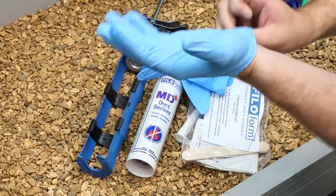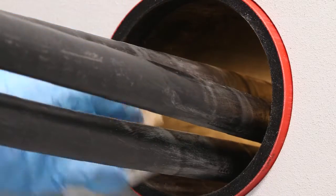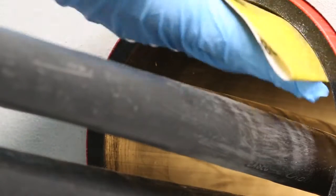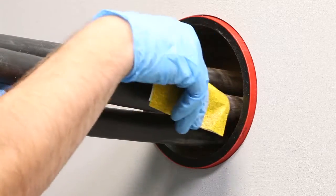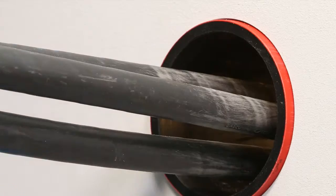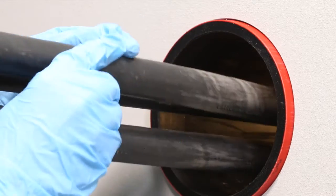The duct and cables or pipes to be sealed must be both clean and dry. Clean and abrade the first 25mm of the cable and 20mm of the inside duct surface. Separate the cables or pipes by at least 5mm from each other and the duct edge.